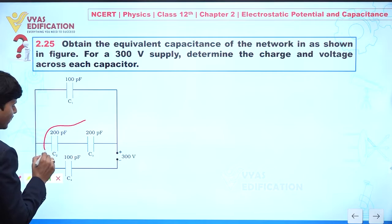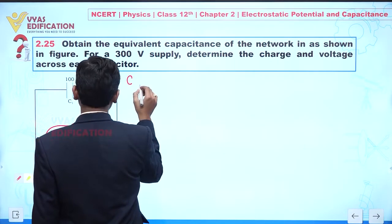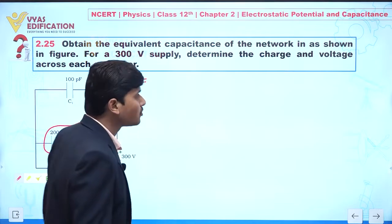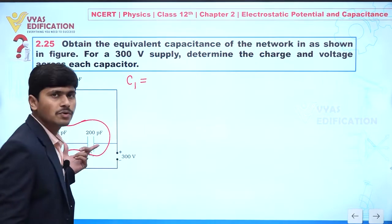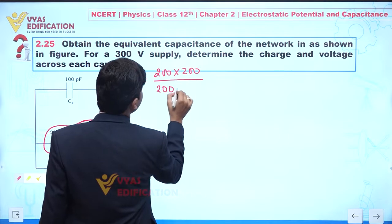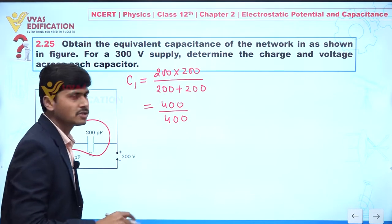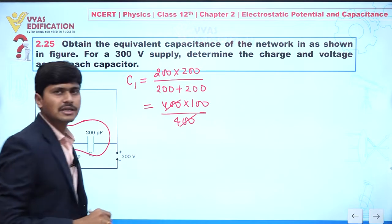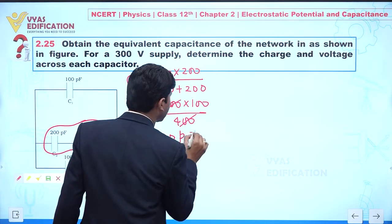We can observe 200 picofarad and 200 picofarad — these are in series. To find the equivalent capacitance for these two capacitors, calling them C1 and C2, we use C_eq = C1×C2 / (C1+C2). So we have 200×200 divided by 200+200, which gives 400 divided by 400, and the equivalent capacitance of these two capacitors is 100 picofarad.